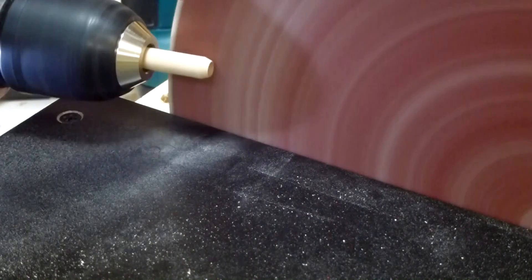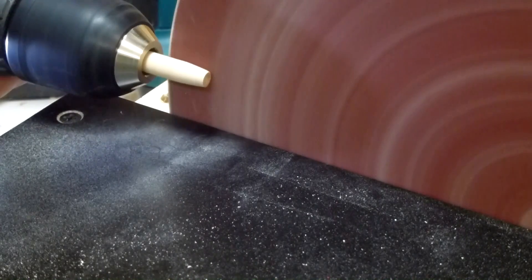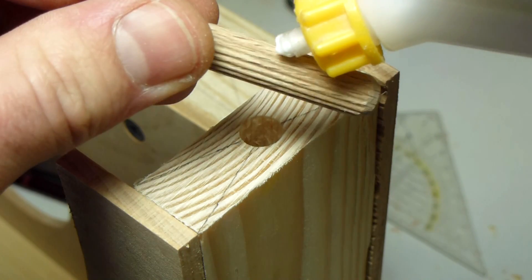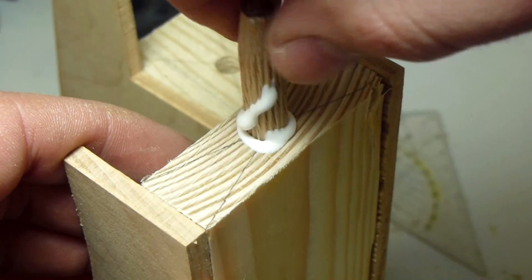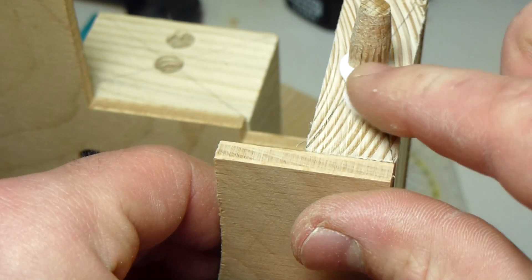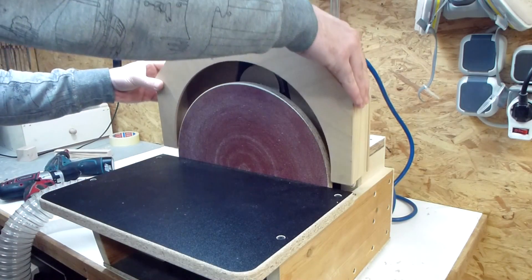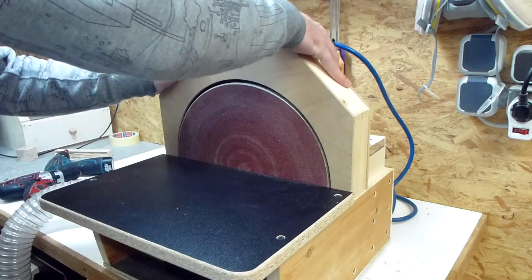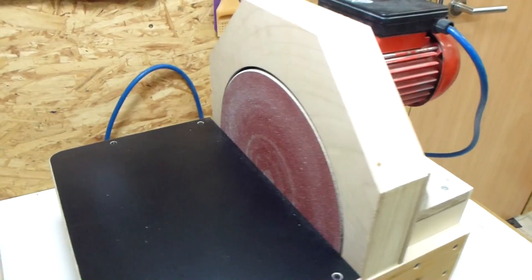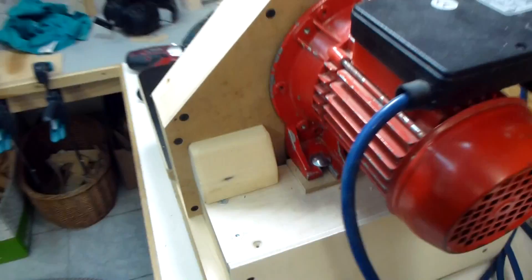I shaped the dowels conical on one end. That makes it easier to put the cover on. With the cover mounted the machine is pretty much fully enclosed.